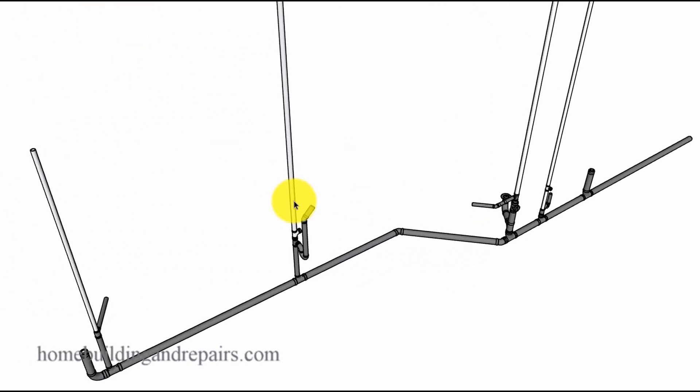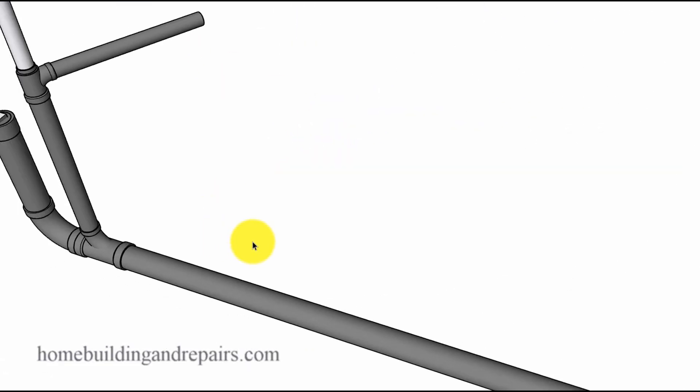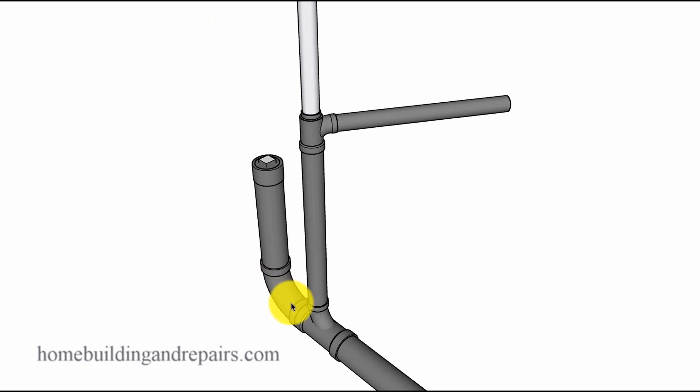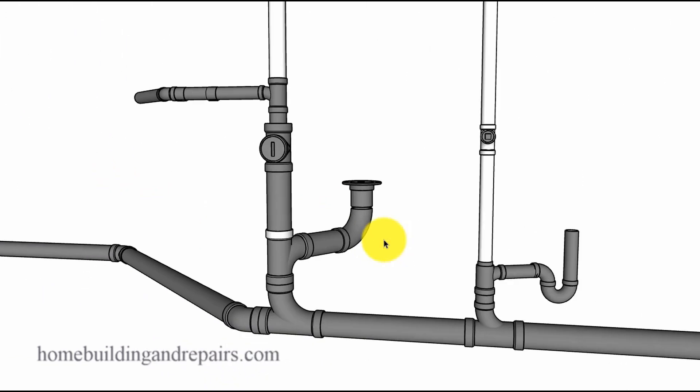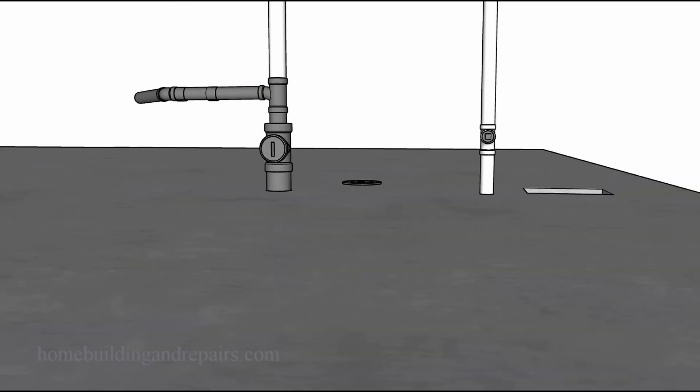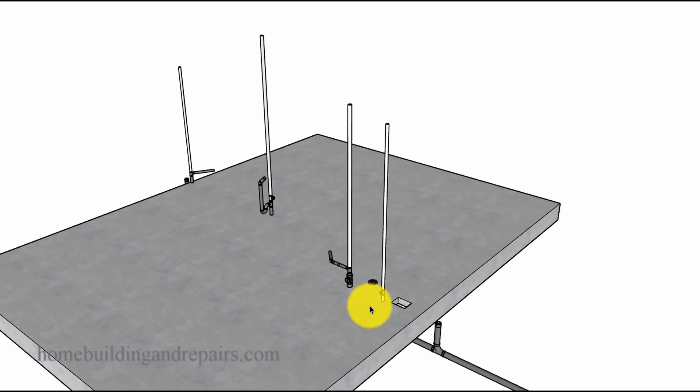So again, single fixture, single vent pipe, probably not going to need a wet vent. And again, the drainage pipe won't always be running horizontal. It can run vertical. And by now you should have a pretty good idea what a wet vent is or at least the difference between a wet vent and a vent.